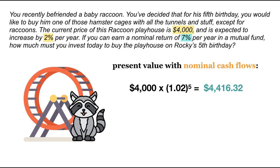Next, we need to discount this nominal future value by 7% for five years to determine how much we should invest today. We'll take $4,416.32 divided by 1.07 to the power of 5. This gives us $3,149. If we invest this amount today at 7%, we will have enough money to buy this Playhouse in five years.